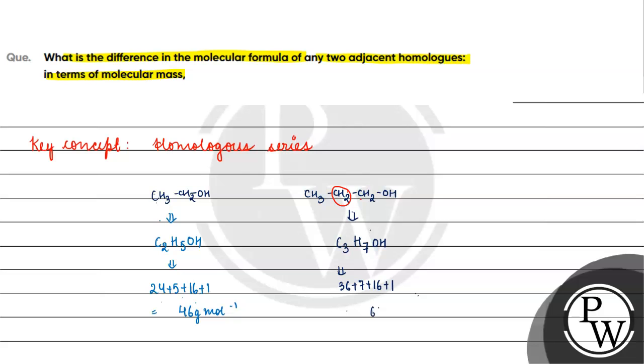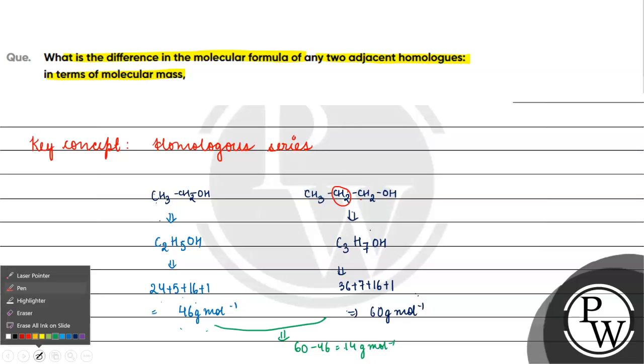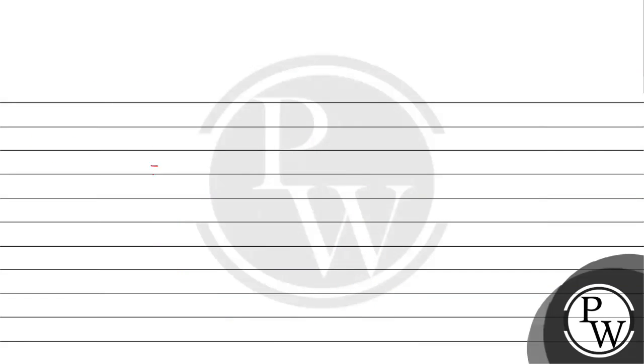What will happen? 12 times 1, which is 12 grams per mole, plus 2 times 1 gram per mole. The difference is 14 grams per mole.